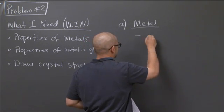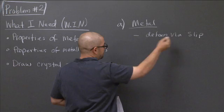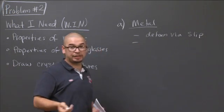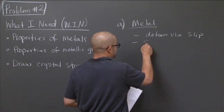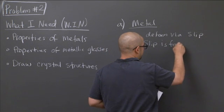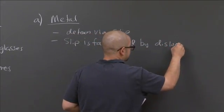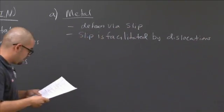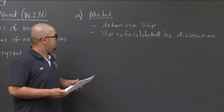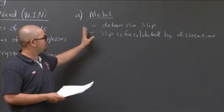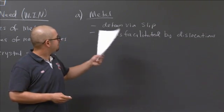I know that metals deform via slip, and slip is facilitated by dislocations. And you should know what dislocation is by now, which is just a line imperfection in your crystal. My metal has planes that are arranged because it sits in a nice crystallographic structure. And the slip, when it undergoes deformation, is actually assisted by dislocations. So having dislocations helps deform our metal.